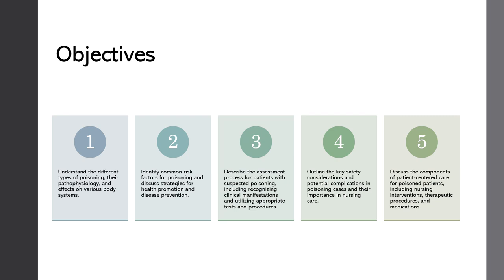Let's look at the objectives for this presentation. We're going to understand the different types of poisoning, their pathophysiology, and their effects on various body systems. Identify common risk factors for poisoning and discuss strategies for health promotion and disease prevention. Describe the assessment process for patients with suspected poisoning, including recognizing clinical manifestations and utilizing appropriate tests and procedures. Outline key safety considerations and potential complications, and discuss the components of patient-centered care, including nursing interventions, therapeutic procedures, and medications.